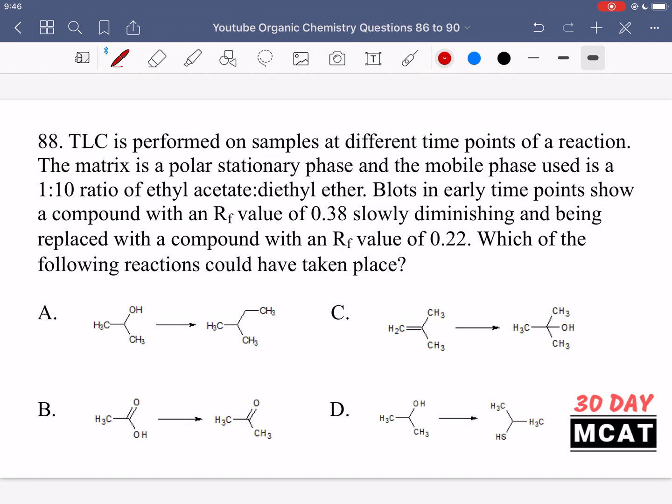So we have a polar stationary phase and you can assume that the mobile phase is going to be less polar than that. Based on that in our TLC, whatever is more polar a compound is, it's going to stick to the stationary phase and travel up less. The RF value is telling us essentially how far a compound traveled. So if an RF value is higher, then that means that compound bonded more so with the mobile phase and was carried higher, meaning it's more nonpolar.